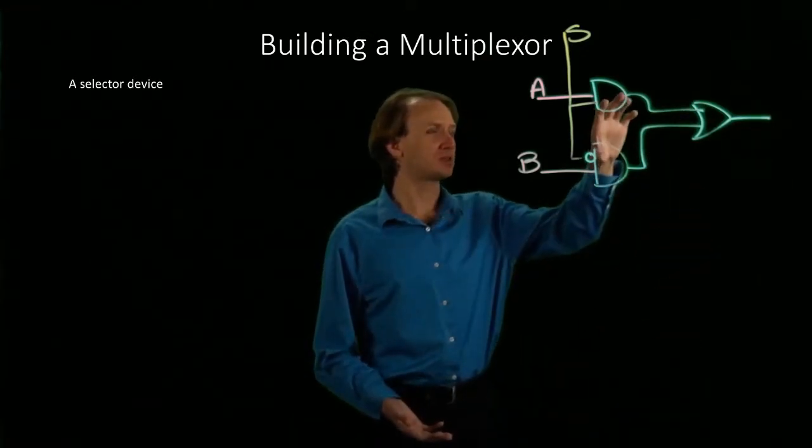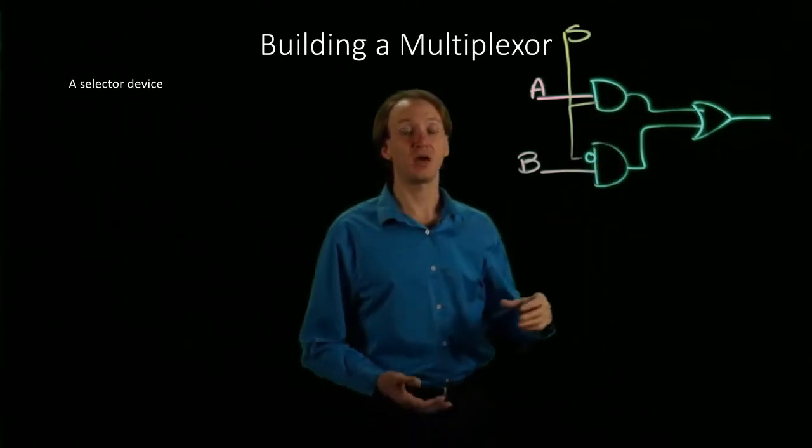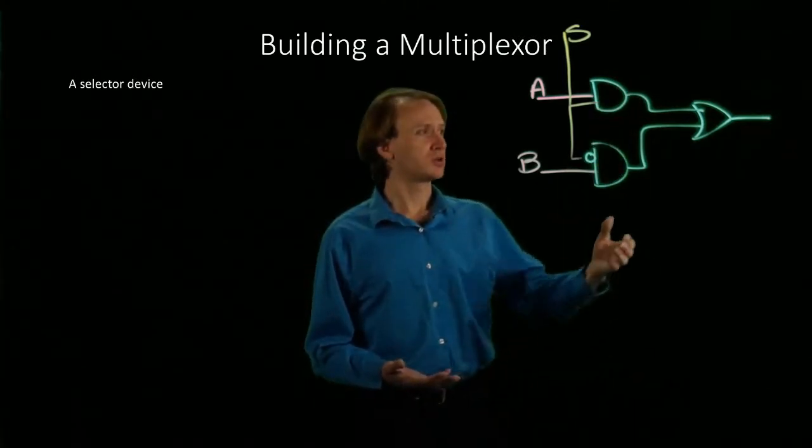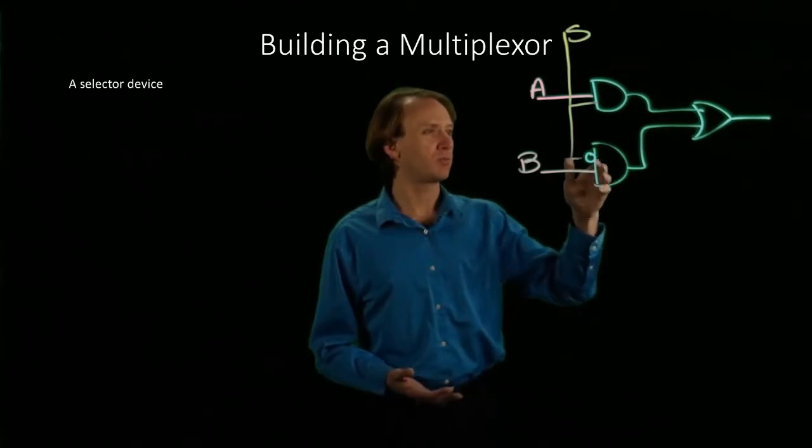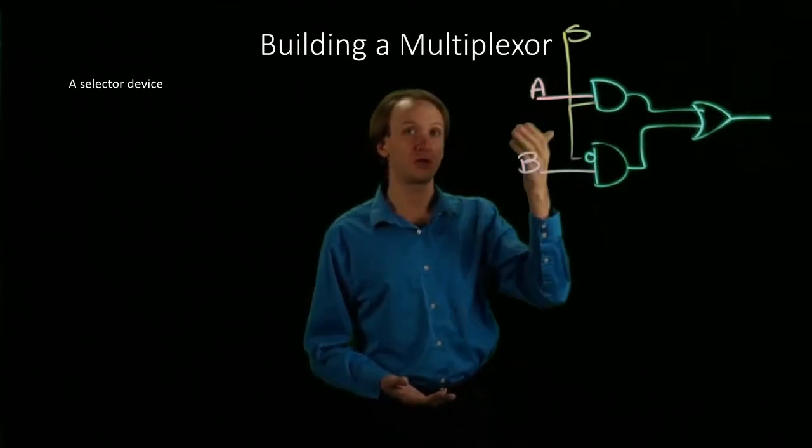But in both cases, only one of these AND gates can ever be true. So our OR gate can only ever pass on the value of either A or B.